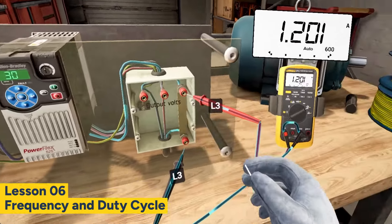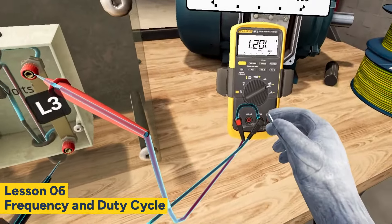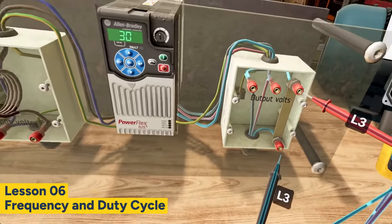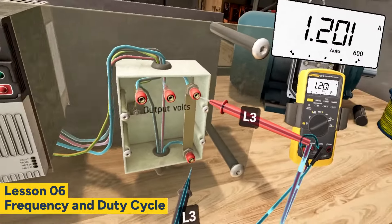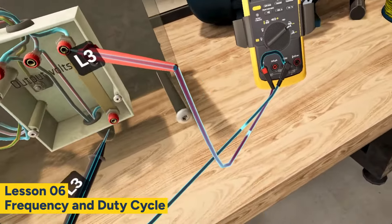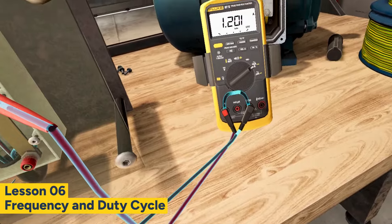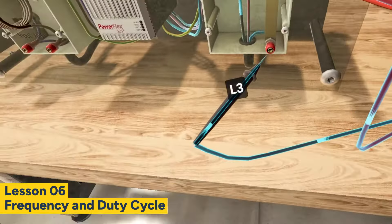Observe how the current flows from the VFD through the multimeter and into the motor. When measuring current with this method, you have to consider that full power is traveling through the multimeter, which poses a great risk to the person using the multimeter, and any unexpected changes in the system parameters, like transients, will affect the multimeter too.